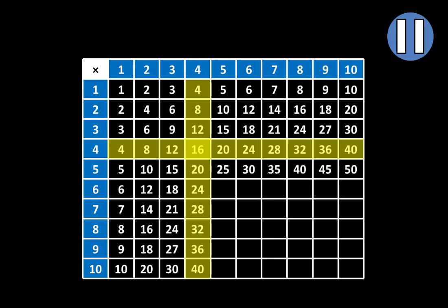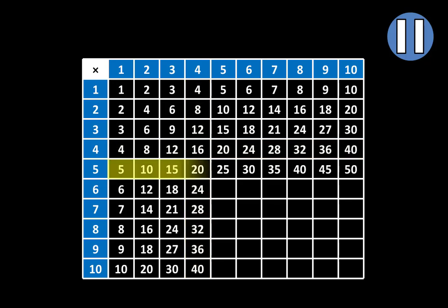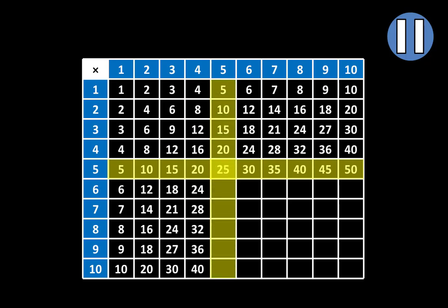In the next row, we see all of the multiples of 5 from 5 to 50. So in this column, we'll see all of the multiples of 5 from 5 to 50. We see 5, 10, 15, 20, and 25. So fill in 30, 35, 40, 45, and 50. Pause the video at any point.